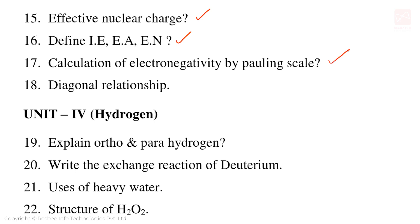In Unit 3, the role of the periodic table is very important. Diagonal relationship is also very important.